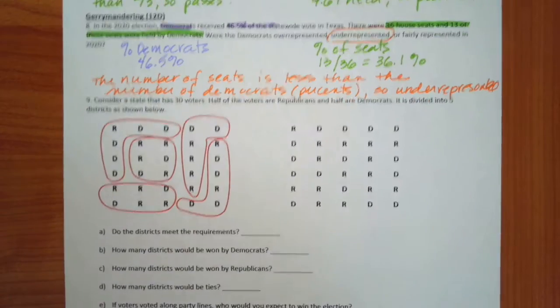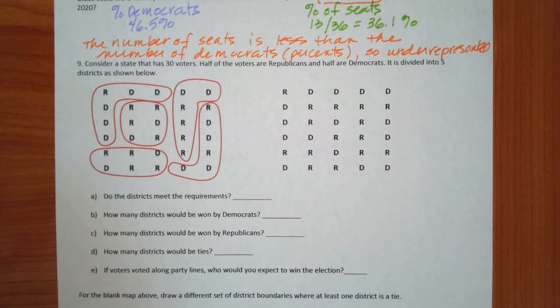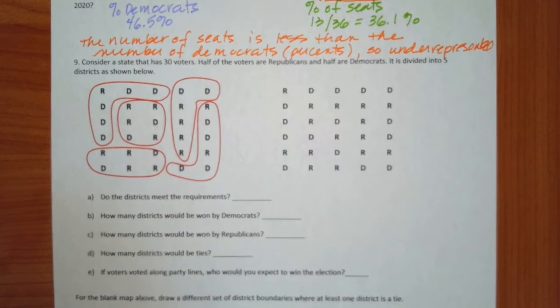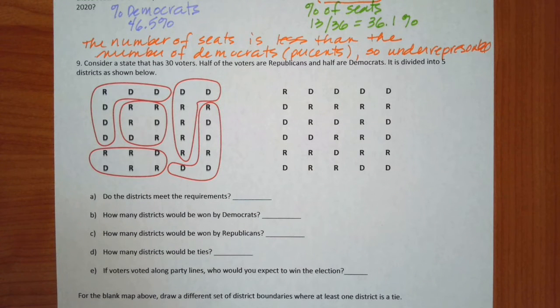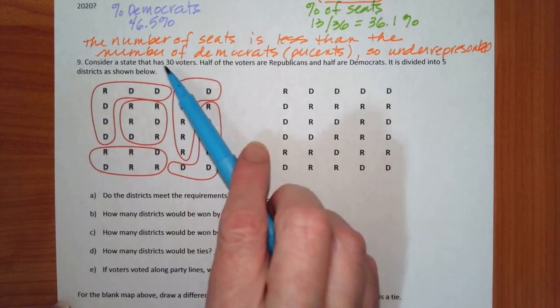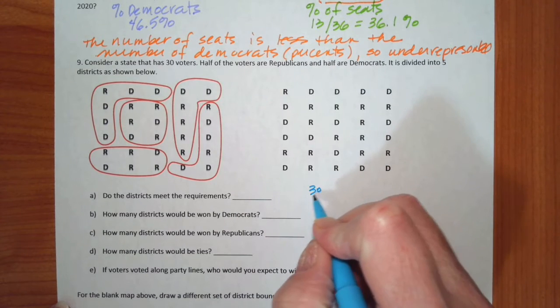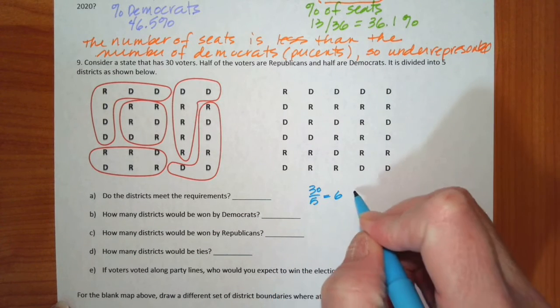Alright, and our last question here, we're going to consider a state that has 30 voters. Half of them are Republican and half are Democrat, and it's divided into five districts. Does it meet the requirements? Well, there are two requirements. Each district has to represent the same number. So if I take 30 divided by five, that's six in each district.